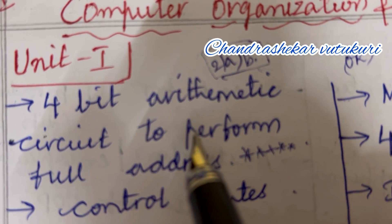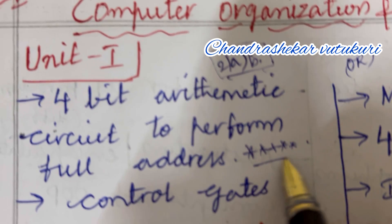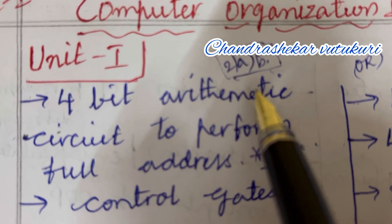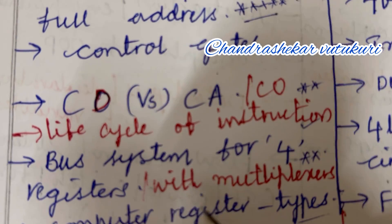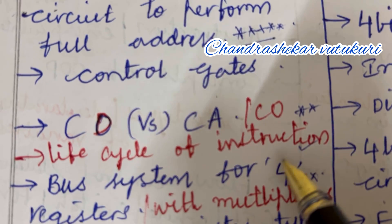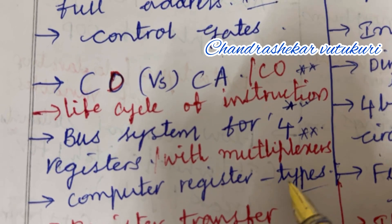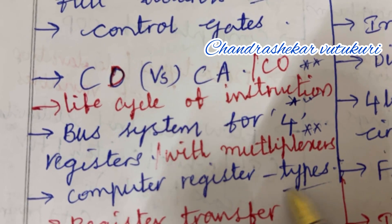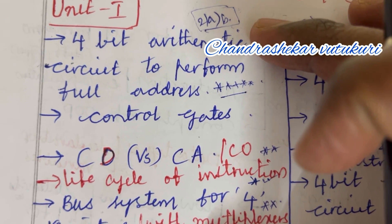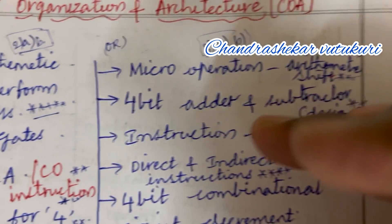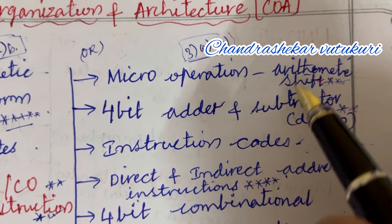The first and foremost question from Unit 1 is a 4-bit arithmetic circuit to perform full addition — set to be the topmost question, which may occur in 2AB. Control gates may be the short question: CD vs CA vs CO. Life cycle of instruction may also be an important question. Bus system for 4 registers with multiplexer, computer registers and their types with short questions, and register transfer are also key topics from this part.